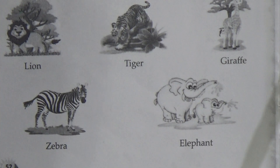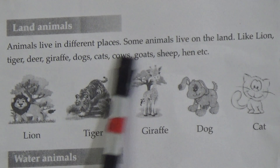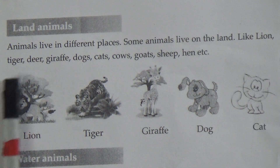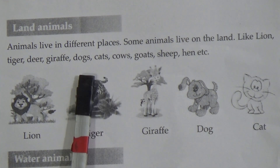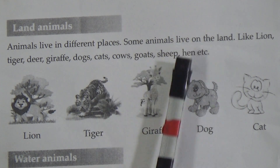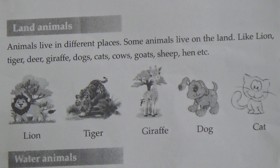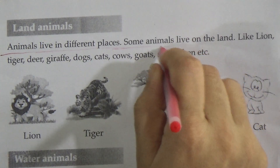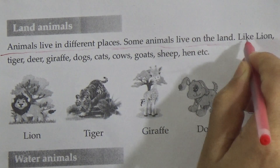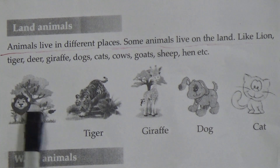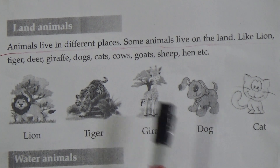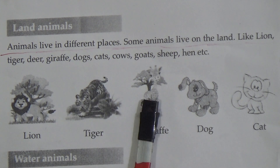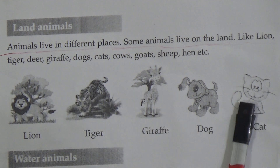Animals live in different places. Some animals live on the land — like lion, tiger, deer, giraffe, dog, cat, cow, goat, sheep, hen, etc. Now underline this: animals live in different places; some animals live on the land and they are called land animals. Lion, tiger, giraffe, dog and cat are all examples of land animals. They live on land.